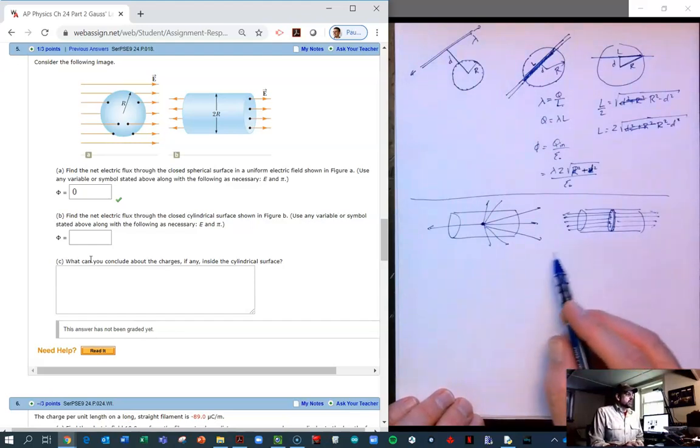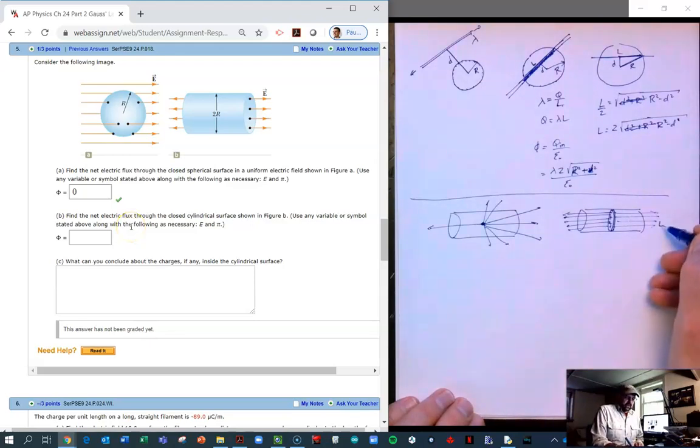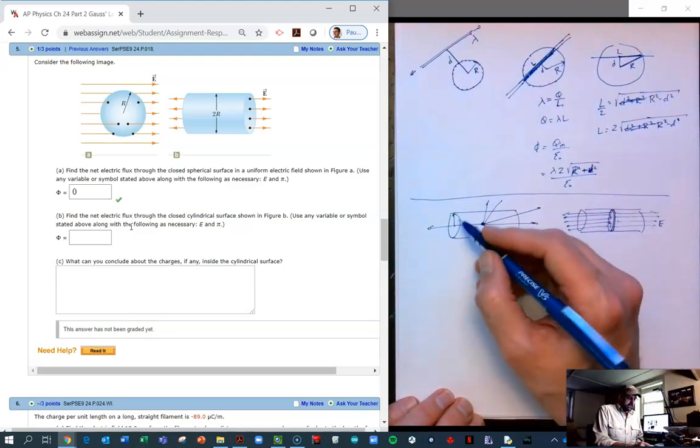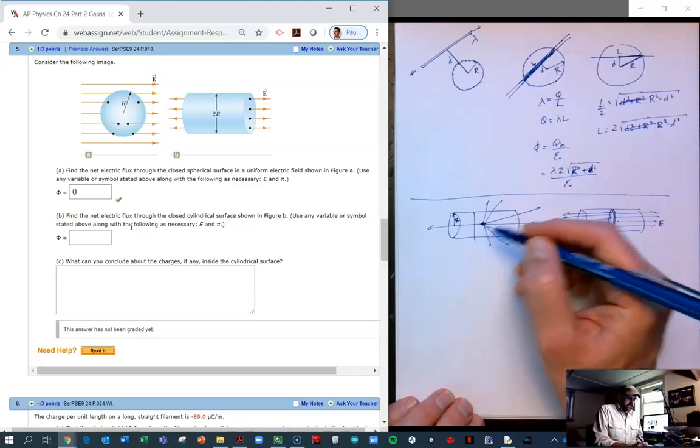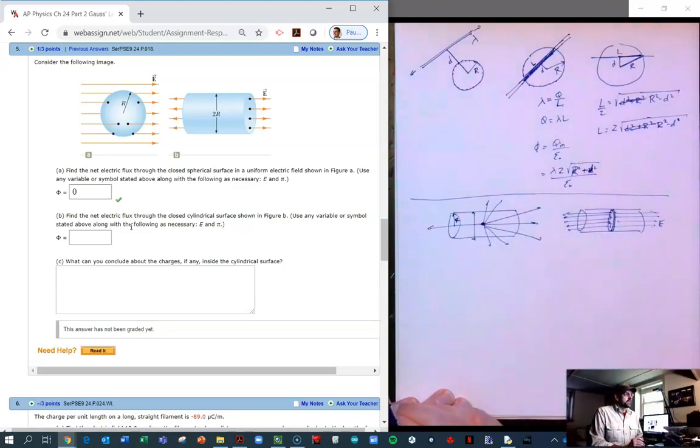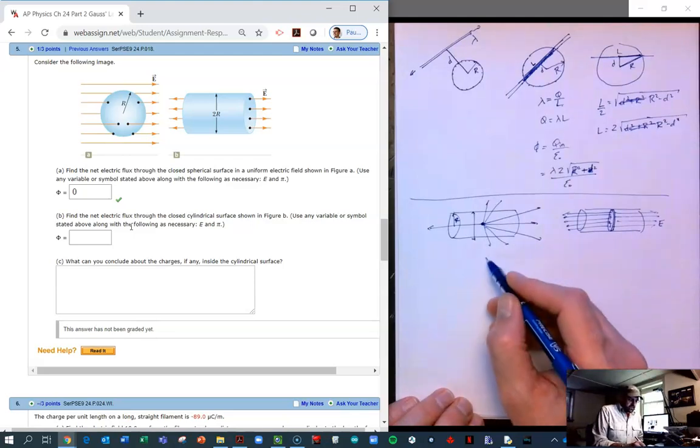So now the question is, what is the net flux? So we're told that the net flux is E. We're given that. And we're told that the radius of our cylinder is R. And this distance here, actually we're told that distance is 2R, so therefore the radius is R.